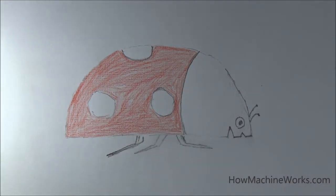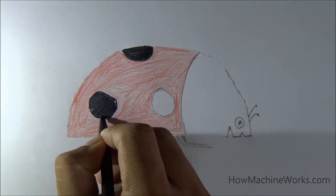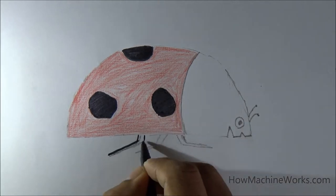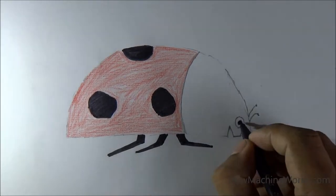Now you need to color the black spots. We're filling it with black color. That's also quite finished. Those are the legs of the ladybird. Now coming towards the head and the face.